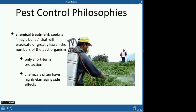There are a few ways to control pests. The easiest is chemical treatment — you spray a chemical on your crop and it's supposed to greatly reduce pest organisms. One problem is it's short-term protection. Also, these chemicals often have highly damaging side effects. You may have heard about losing bee colonies — a lot of that is thought to be due to insecticides specifically. The chemicals are also dangerous for human health, which is why you should always wash your produce before eating it.